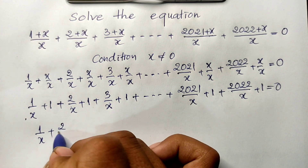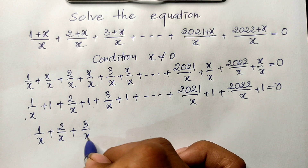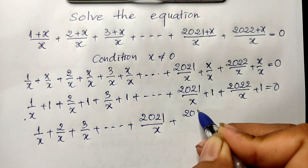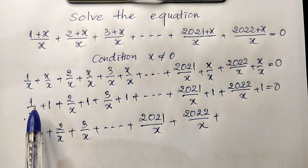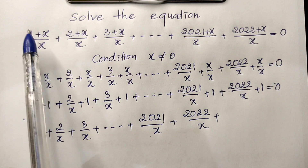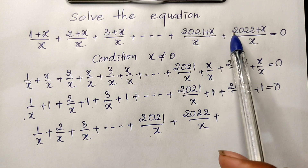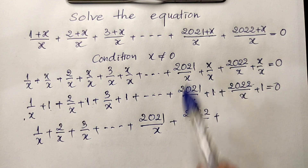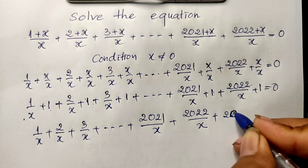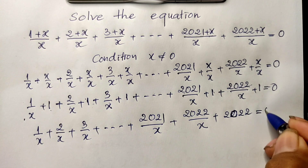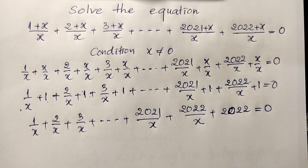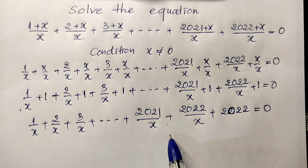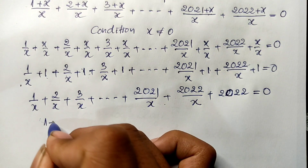Writing this out more clearly, I separate the fractional parts from the integer parts: 1/h plus 2/h plus 3/h plus ... plus 2^21/h plus 2^22/h, plus a sum of 1's. The 1's run from term 1 to term 2^22, so there are 2^22 ones in total, giving us 2^22.